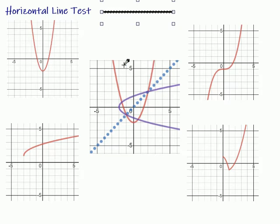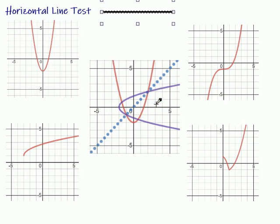Now, for the vertical line test, we would look at the red one and say, okay, if we did the vertical line test, that would indeed be a function. If we look at the inverse, which is right here, and we did the vertical line test, that would not be a function. It would fail the vertical line test because that vertical line would touch more than once — it would touch there, and it would touch there. So the purple one is not a function.